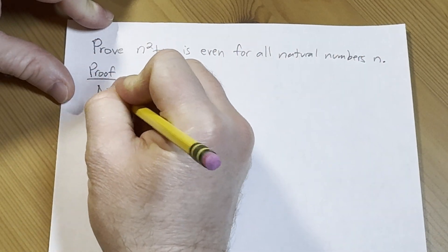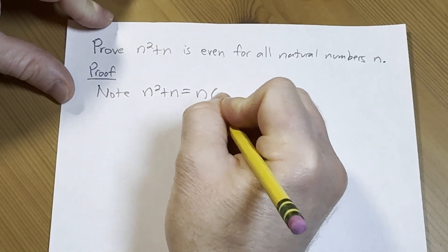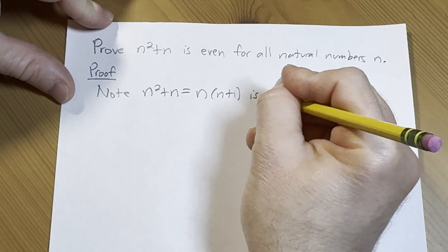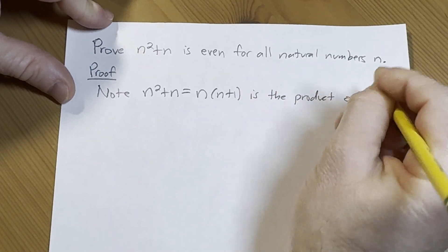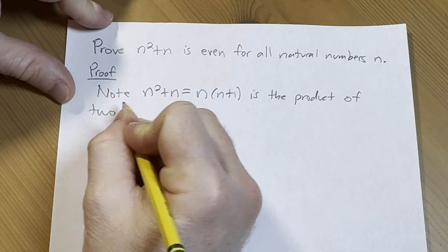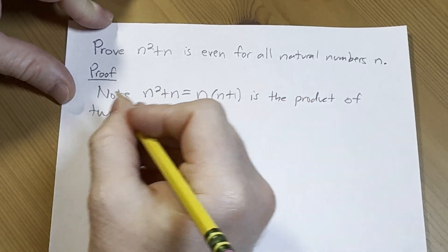So note n squared plus n is n times n plus 1, which is the product of two consecutive integers.